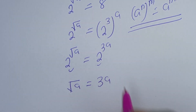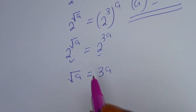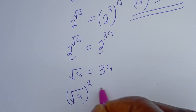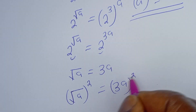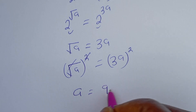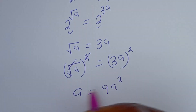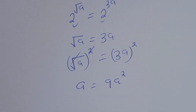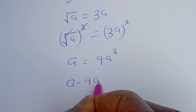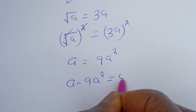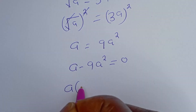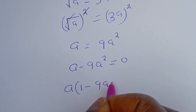We have square root of a is equal to some expression. Let's square both sides: square root of a squared is equal to the right side squared. This cancels, so a is equal to 9a squared. Let's bring this to one side: a minus 9a squared is equal to zero.